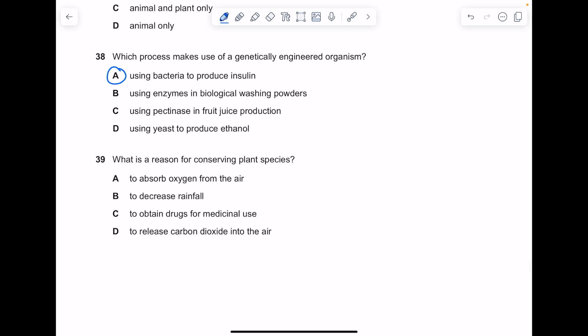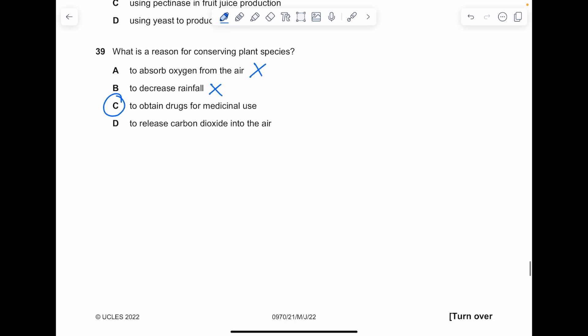What is the reason for conserving plant species? To absorb oxygen from the air - no, they absorb carbon dioxide. To decrease rainfall - no, transpiration of plants increases rainfall. To obtain drugs for medicinal use - that is totally correct. We get so many of our drugs from plants.